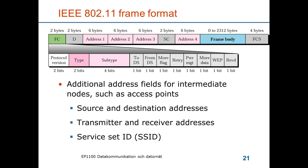Here I show the 802.11 frame format. It differs from the 802.3 format in some regards. In the upper part, you can see that there are four addresses listed. The reason is that we need additional addresses for intermediate nodes such as access points and the source and destination addresses. There is also a need to identify the service set, the BSS, that the node is associated with.